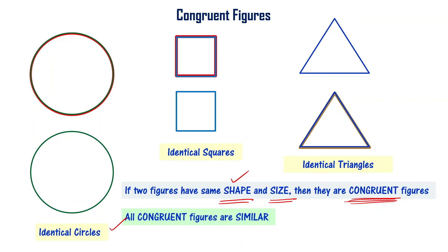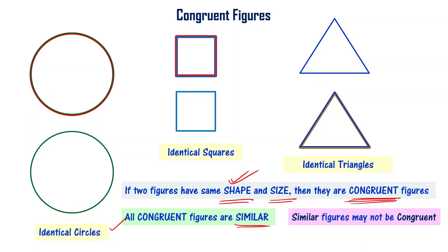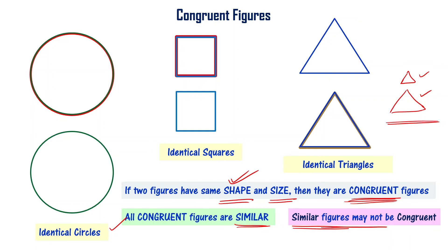If two figures have the same shape and size, they are called congruent figures. Similar figures only require the shape to match, not necessarily the size. So all congruent figures are similar, but similar figures may not be congruent. For example, two equilateral triangles of different sizes are similar but not congruent.